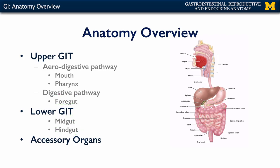There are also accessory organs of the digestive system. These consist of the liver and gallbladder, as well as the pancreas. These are glands that are going to secrete products into the lumen of the duodenum to enhance digestion so that we may have good absorption of materials.